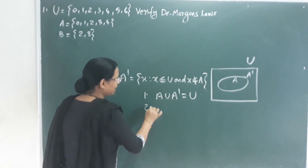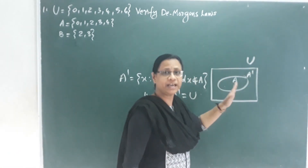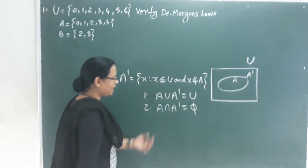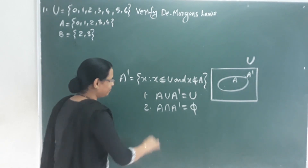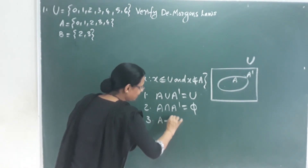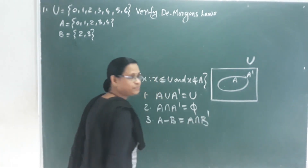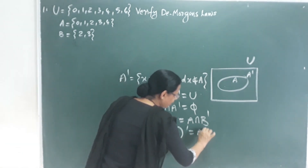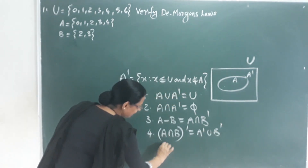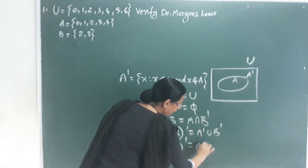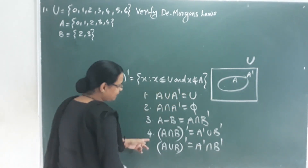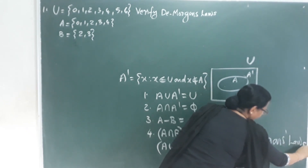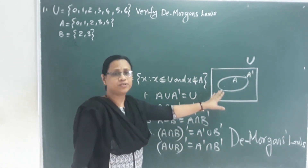Another property: A intersection A' is equal to the null set (phi), because A and A' share no common elements. Also, A minus B equals A intersection B'. De Morgan's laws state: (A intersection B)' equals A' union B', and (A union B)' equals A' intersection B'. These four properties are properties of the complement of A set.